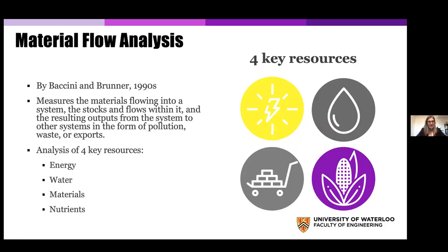Material flow analysis is usually what is used to quantify these arrows representing the inputs and outputs. For the urban setting, it's really limited to four key resources: energy, water, materials used for construction, and nutrients — which is food that serves the population of cities. Limiting it to those four gives a pretty good picture and tells a pretty good story of what goes on in cities.